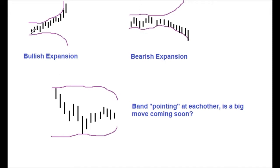The first thing to teach you is something called bullish and bearish expansions. What you'll have is the Belinga Bands will be quite tight together and then they will start to run away from each other — that is an expansion. An expansion means volatility, so a big move is about to occur.